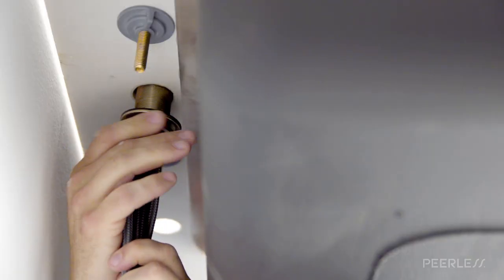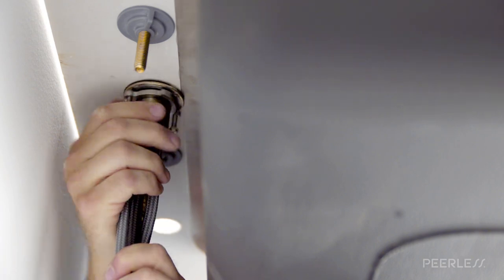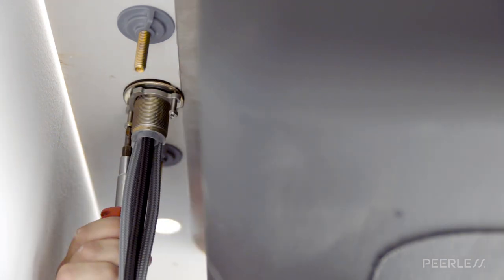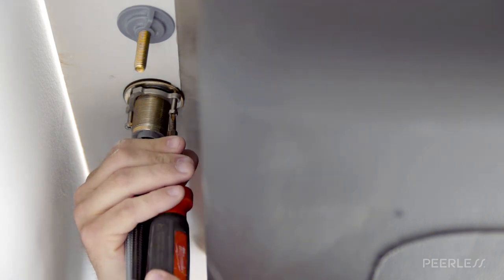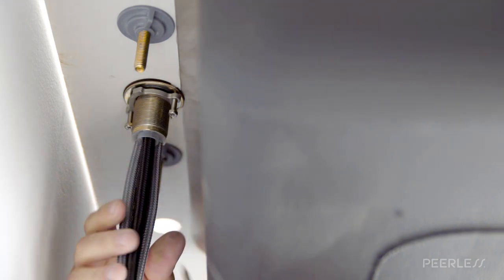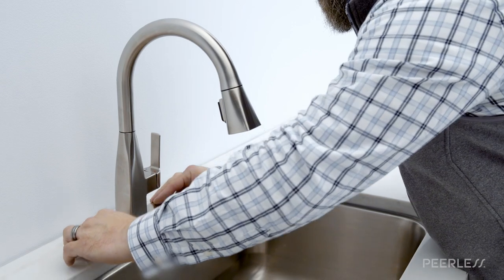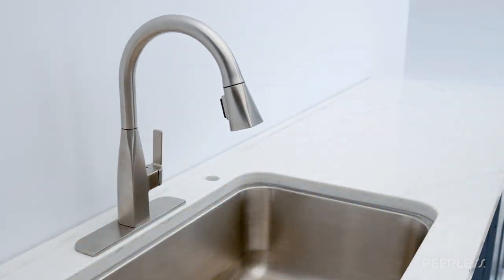Then, hand tighten the nut onto the shank and lock the nut into position by tightening the screws with the Phillips screwdriver. Make sure the escutcheon is centered under the faucet and parallel to the wall or backsplash, and adjust if needed.